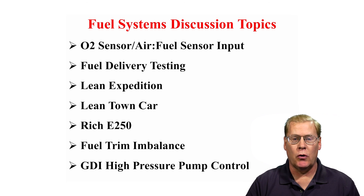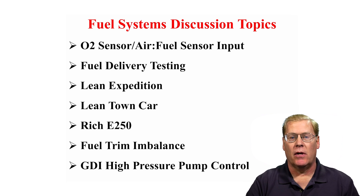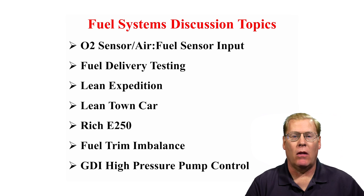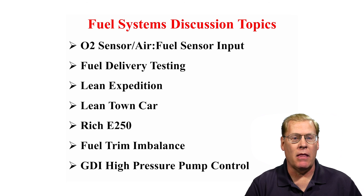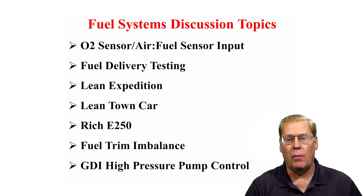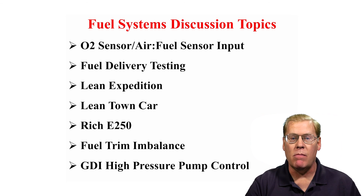After we go through those two vehicles that have lean concerns, I have an E250 that is rich, so we'll spend a little time adding more tests to our diagnosis. Then we'll move to a vehicle that has an imbalance in fuel trims — one side of the engine on this V engine has positive trims, but the other side has negative trims. There can be a couple of reasons for this to occur, so we'll explore how that is diagnosed and what it means to us.